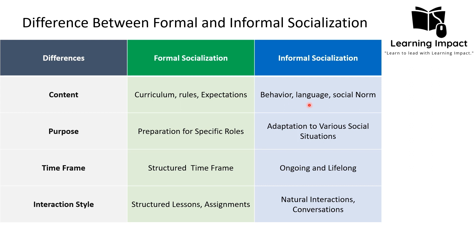Informal socialization content also includes language, social norms, and how to interact within a society in different social situations. For example, a child learns their mother tongue or native language from their parents — these are all examples of informal socialization.